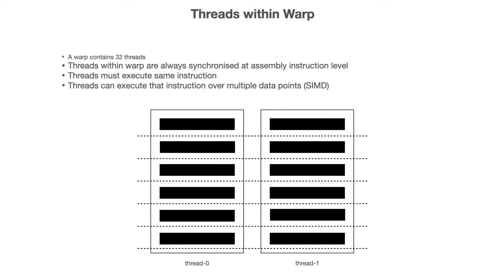A warp contains 32 threads. Threads within a warp are always synchronized at the assembly instruction level, and the threads must execute the same instruction over multiple data points. That's called SIMD — single instruction, multiple data.